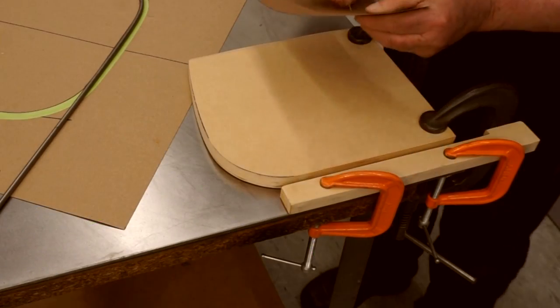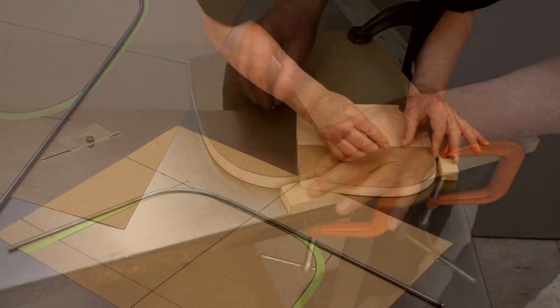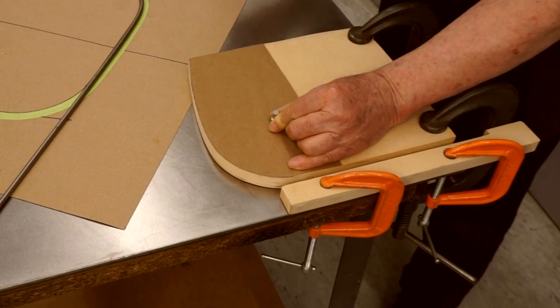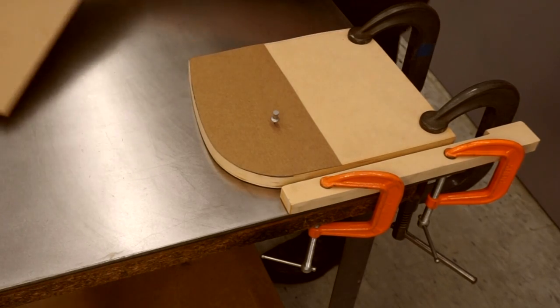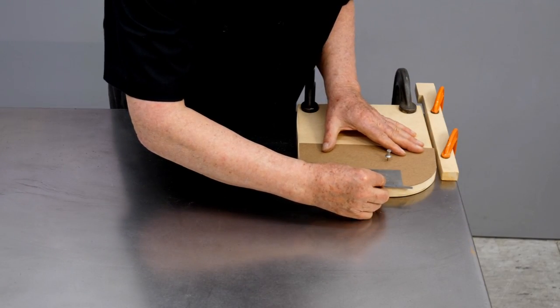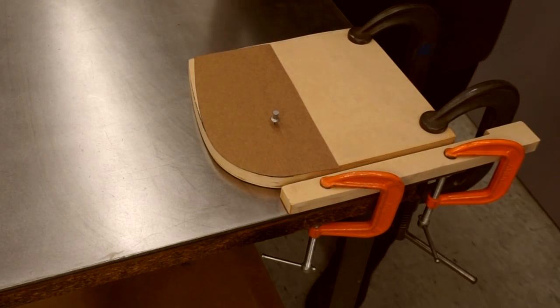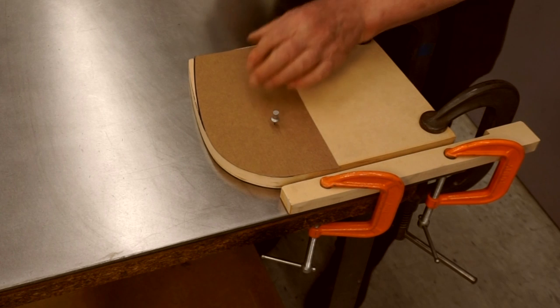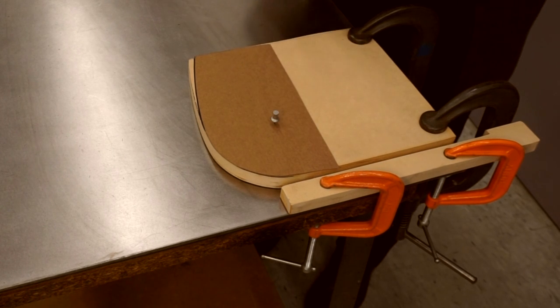I've cut a paper template that matches the curve on the form. Let's put that into place, and I'll rotate this about 5 degrees. Then I'll mark a new line. Then I can cut this line, and we'll bend another test piece.